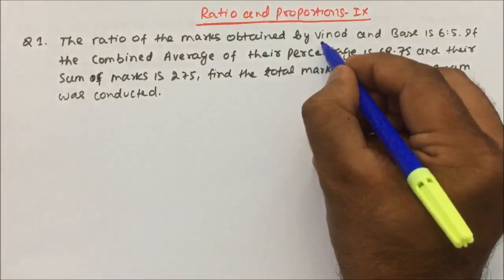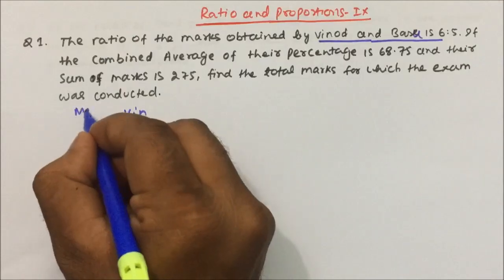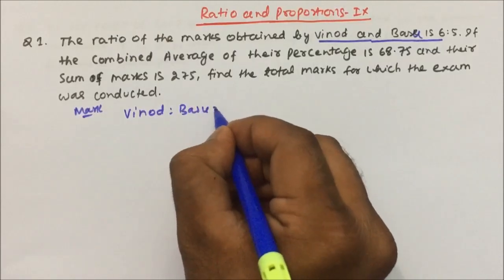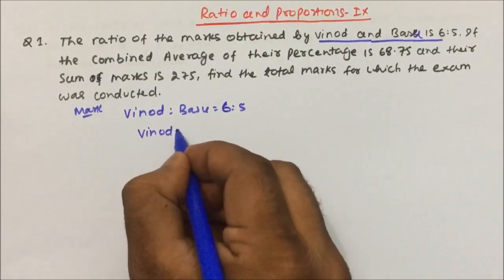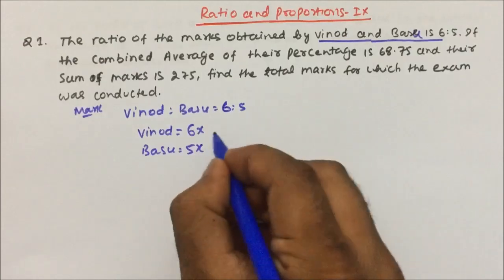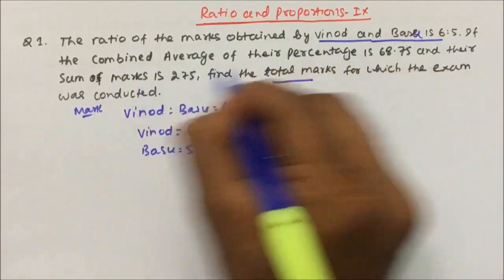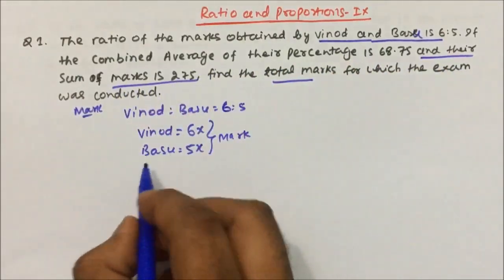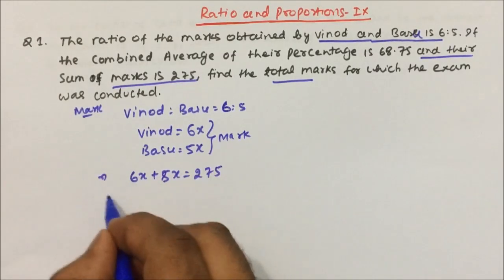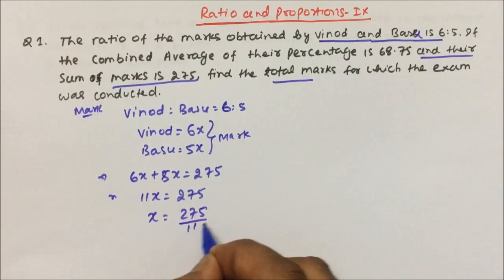The question is: the ratio of marks obtained by Binod and Basu is 6 is to 5. So the marks of Binod and Basu are in the ratio 6:5. In terms of value, Binod will score 6x marks and Basu would have scored 5x marks. They are telling that the sum of the marks is 275, so 6x plus 5x equals 275, which means 11x equals 275, and x equals 275 divided by 11, which is 25.